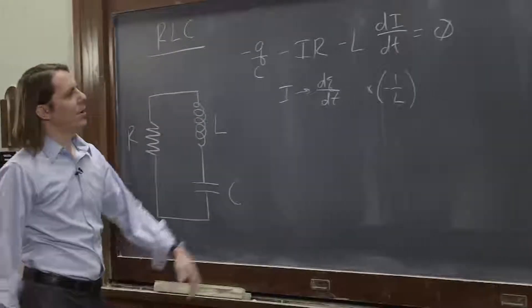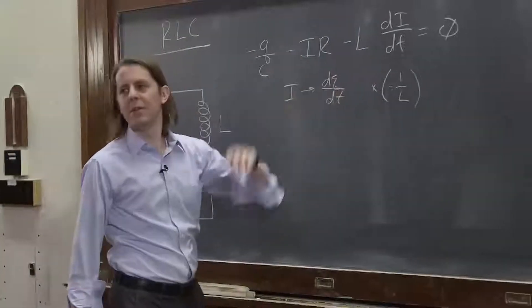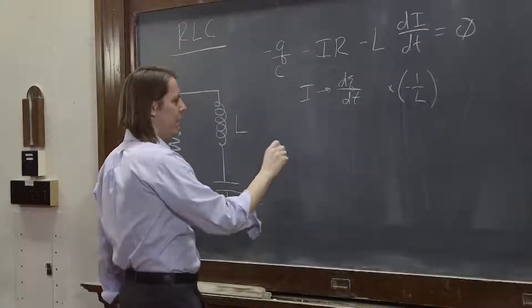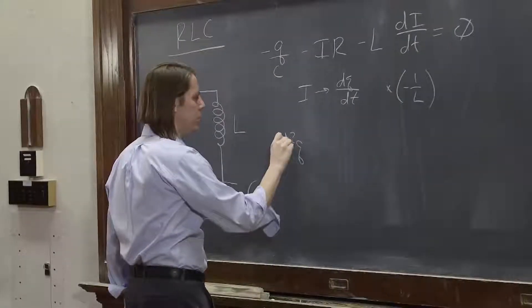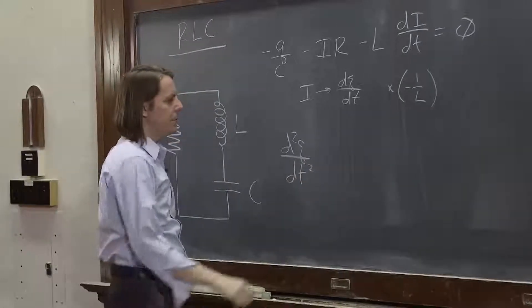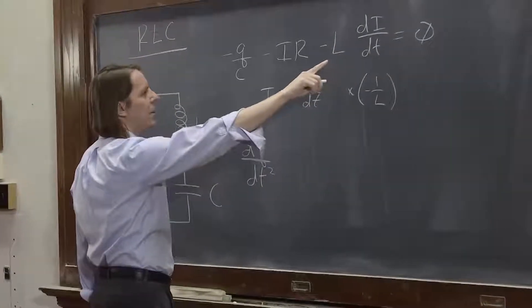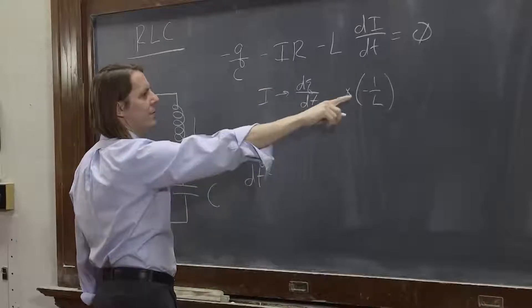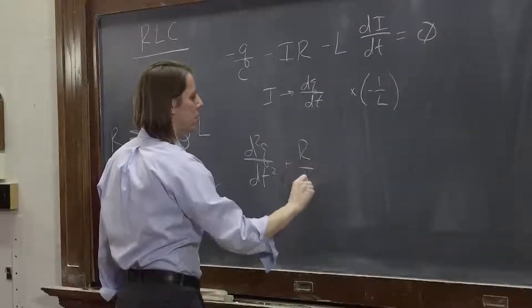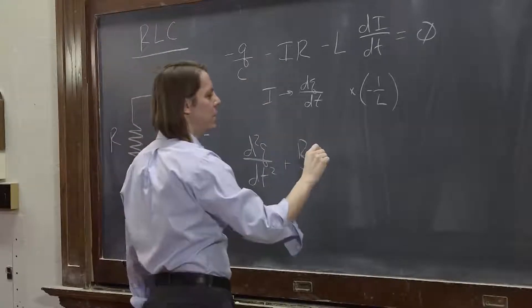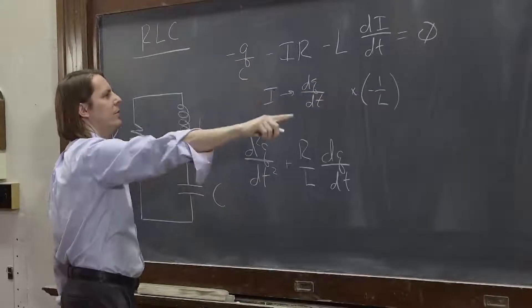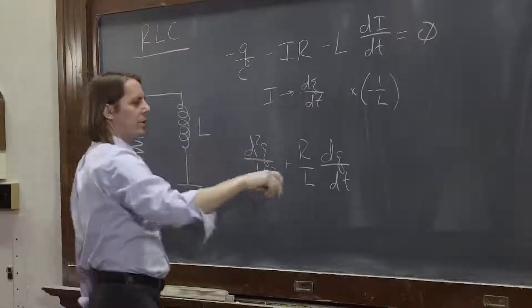If you multiply that by minus 1 over L, then you'll get plus 1. You'll get just d²Q/dt². So if we do that and reorder them a little bit, we get d²Q/dt² on that term, plus, and then you would go to your next order derivative. That's positive R over L, and then dQ/dt, and then also positive Q over LC.